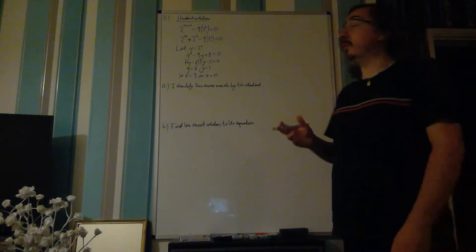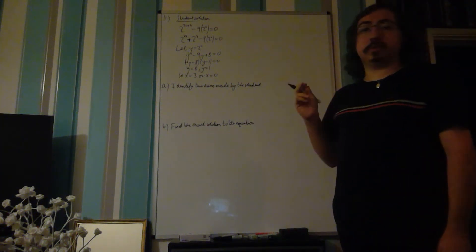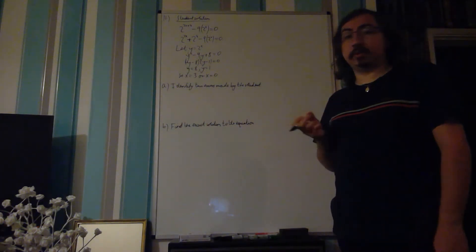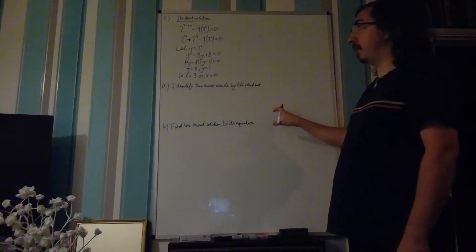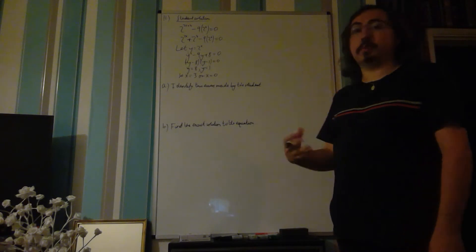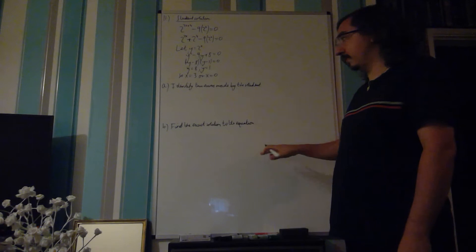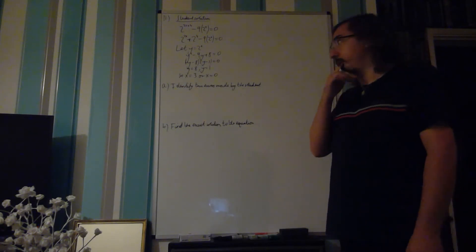For question 11 you're given a student solution to a problem and there are some mistakes in that solution. You need to identify what those mistakes are and what they should really be and then use those corrections to find the exact solution to the equation.